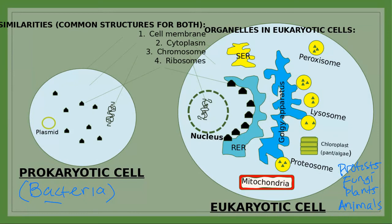The similarities between prokaryotic and eukaryotic cells are the four shared structures: cell membrane, cytoplasm, chromosome, and ribosome — which is the organelle used for making proteins.